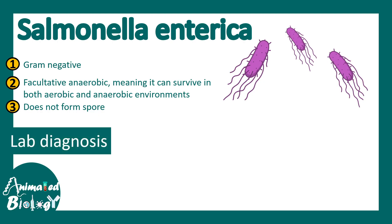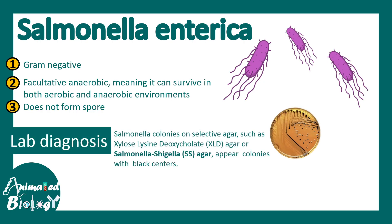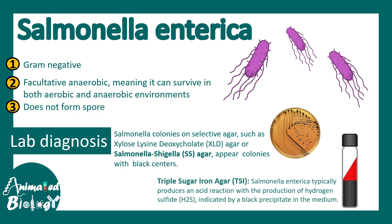Lab diagnosis involves specific differential media such as SS media — that is Salmonella-Shigella agar media. The colonies for Salmonella would appear as blackish, just like this plate. There is also another test known as the triple sugar iron agar test. In this case, H2S gas would be produced and it would ultimately lead to a black precipitate in the medium that you can see here.